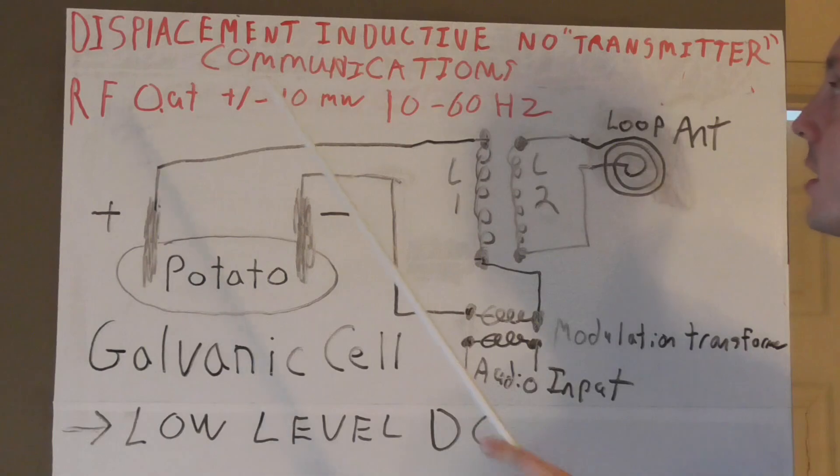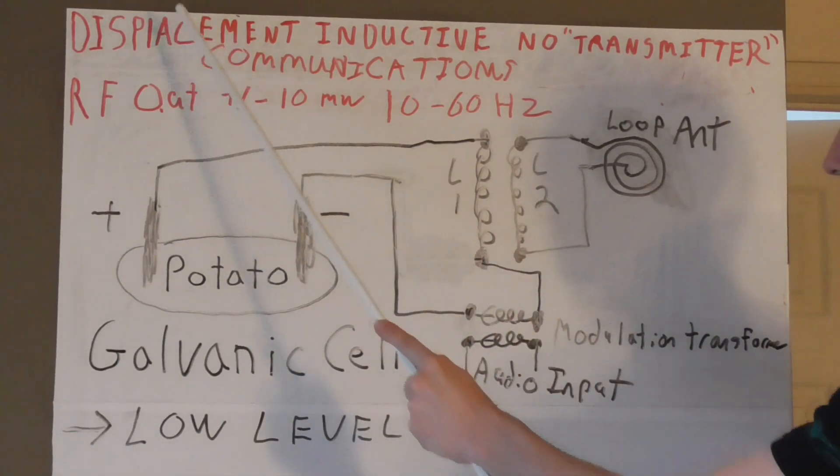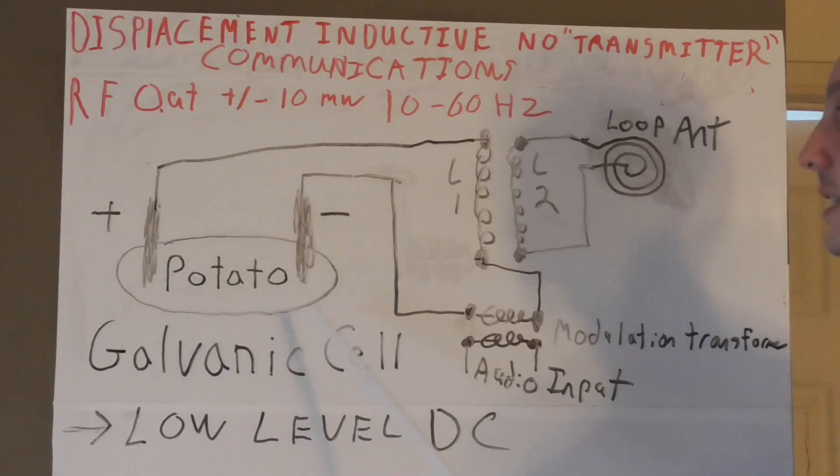Wait, since we're using displacement inductive method we're biasing with a DC voltage, and it's thanks to the modulation which does the displacement of this static DC that we're able to superimpose. Another way of looking at it is this hidden information in the carrier wave, which is in this case the low level AC that comes from the potato. We modulate that, we create a field and we get an RF without using any transmitter.